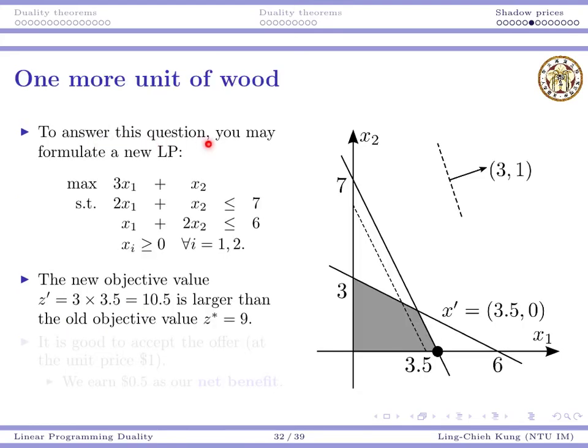So let's see what we may do. I want to answer this question, so I may formulate a new linear program like this. This number becomes seven because if I have that additional unit of wood, this would be my new capacity or new supply amount of wood. The new problem can be solved graphically. We can see that the original constraint is here. And now with one additional unit, it moves to the right. And then the feasible region expands a little bit. Then the optimal solution becomes 3.5. The new objective value becomes 1.5 larger. Certainly it is good to accept the offer because this one additional unit of wood cost me $1, but it will allow me to earn $1.50. So 0.5 is my net benefit, which is really good.